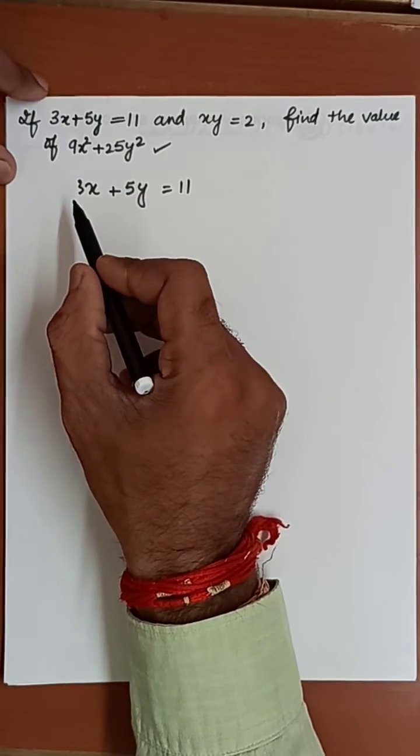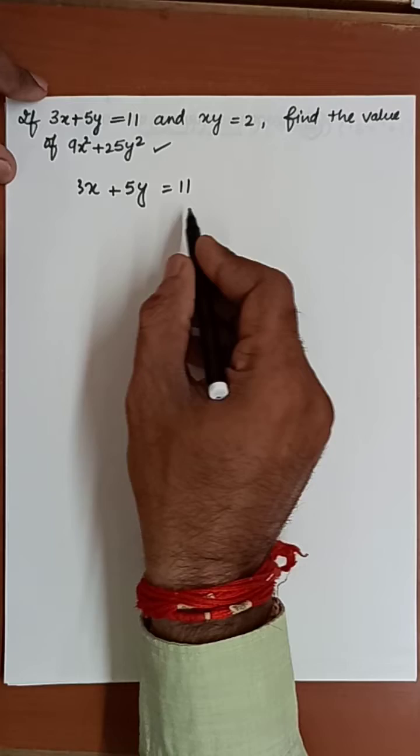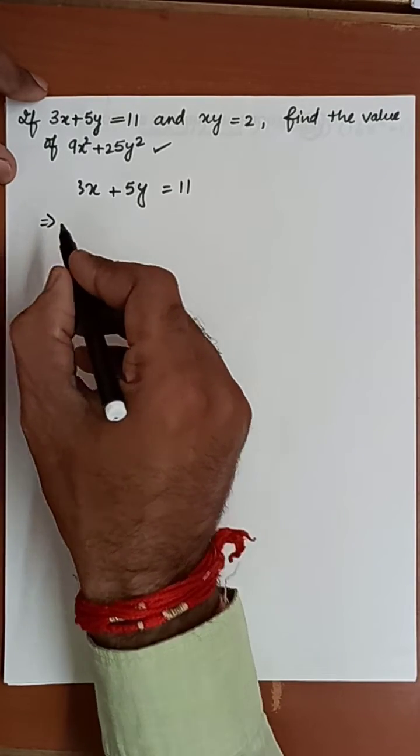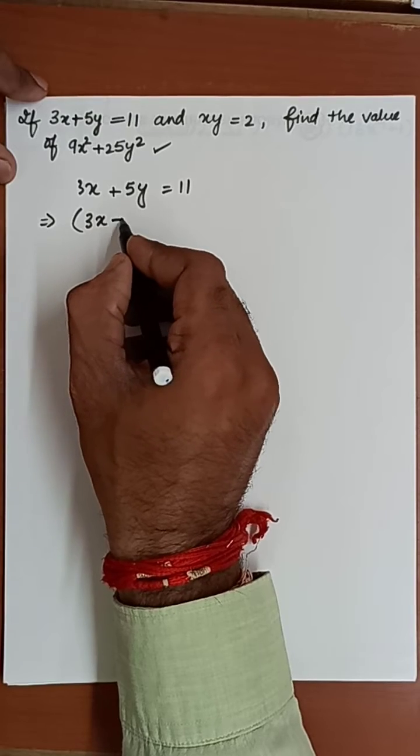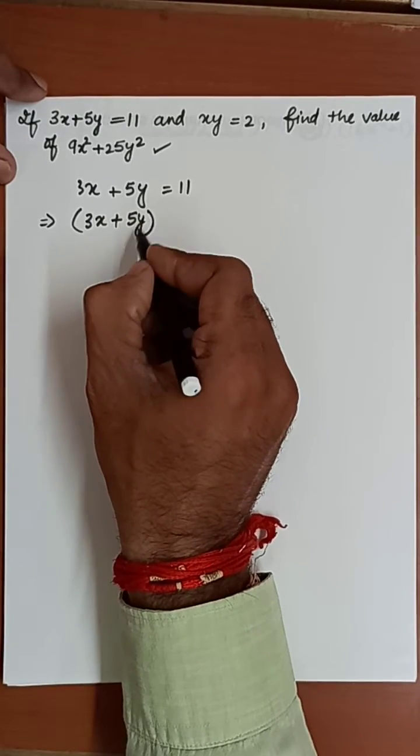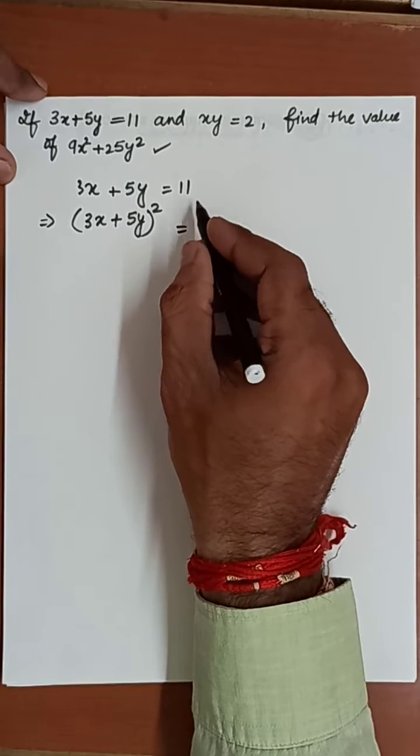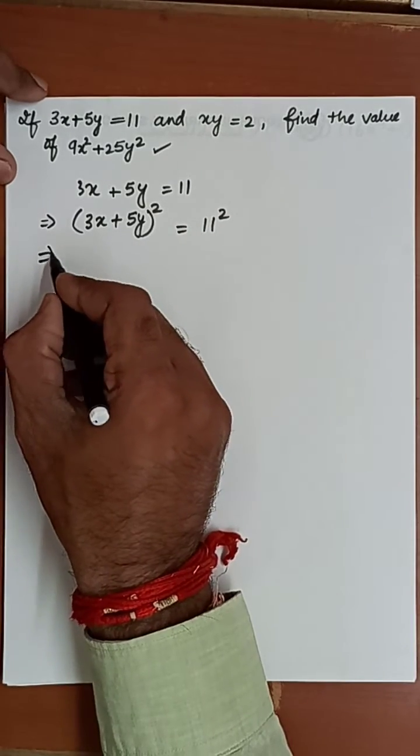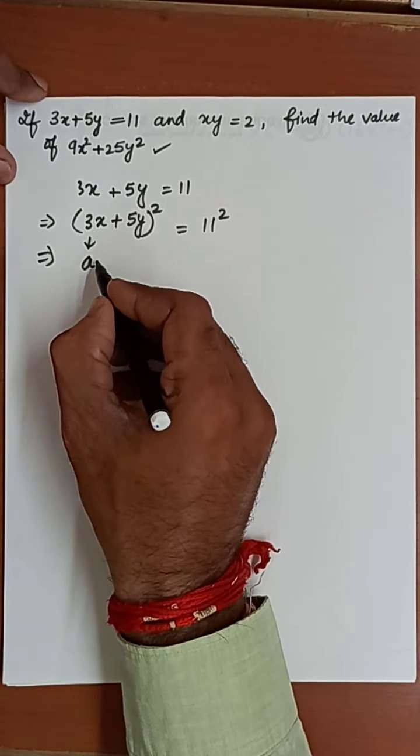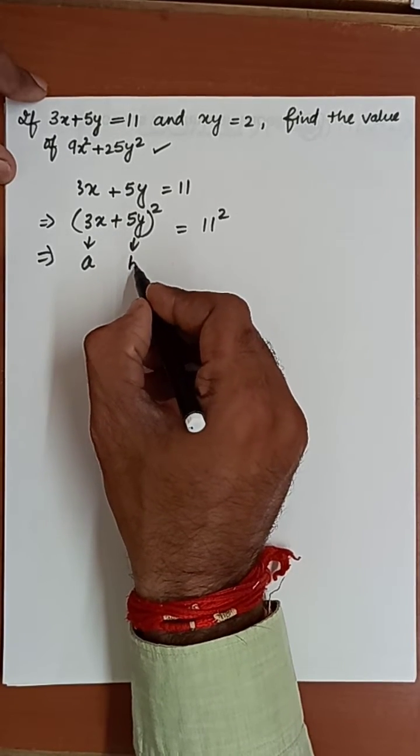Let's square both sides of the equation. When you do the square of the left hand side, it will be 3x plus 5y whole square equals the square of the right hand side, which is 11 square.